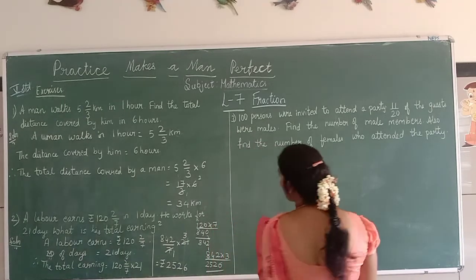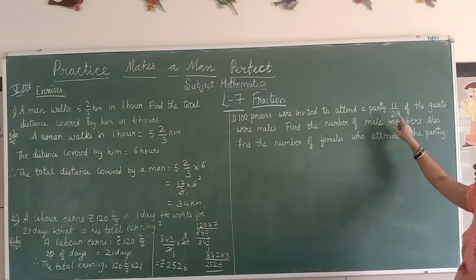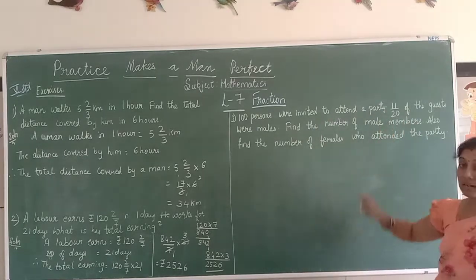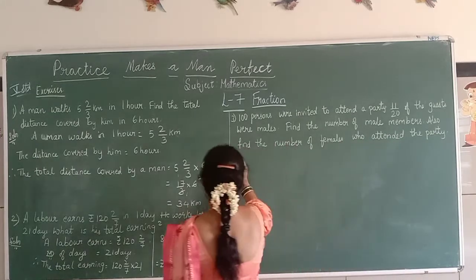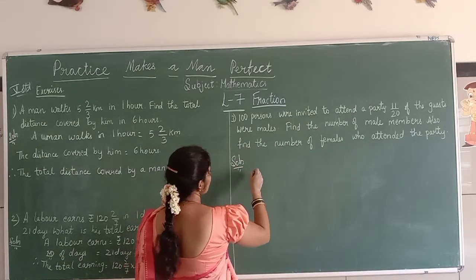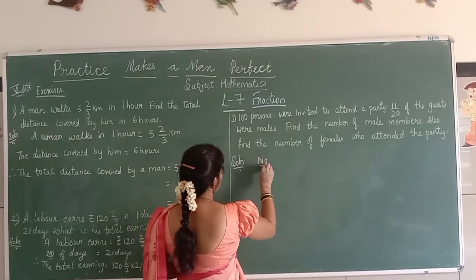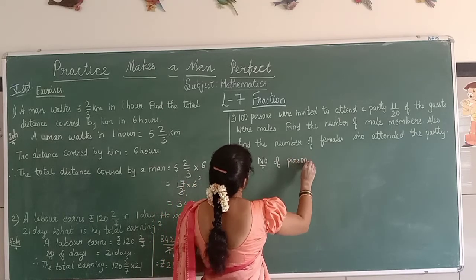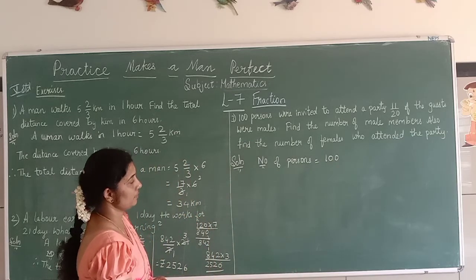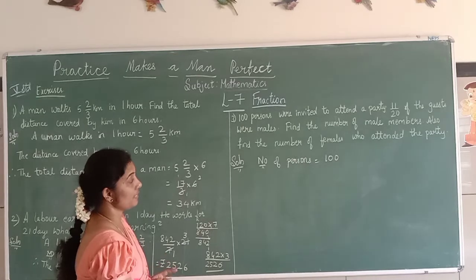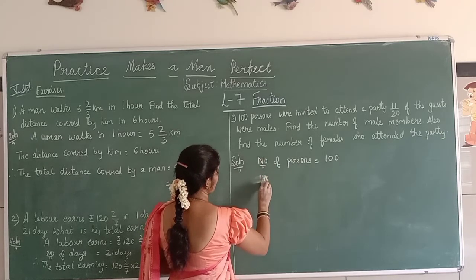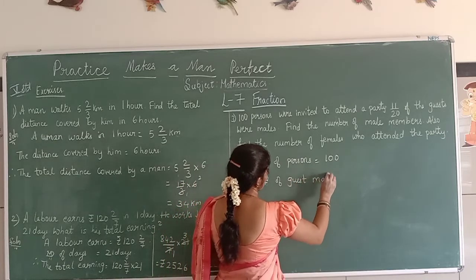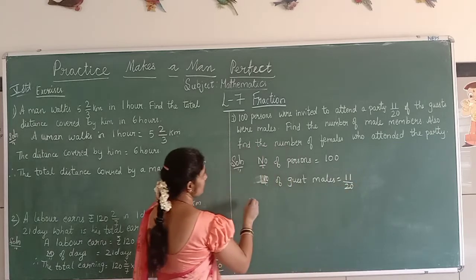Next, listen carefully. 100 persons were invited to attend a party. 11/20 of the guests were female maids. Find the number of male members and also the number of female members. So total number of persons invited is 100, and 11/20 of guests were female maids.